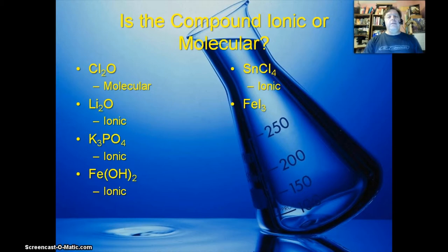FeI3: that's iron three iodide: ionic. Al2(SO4)3: that's aluminum sulfate: ionic. CO2: that's carbon dioxide: molecular.